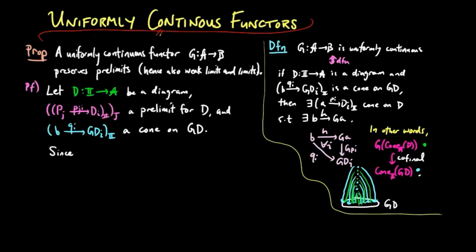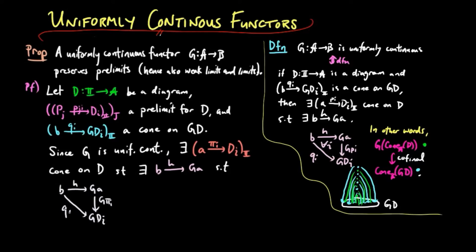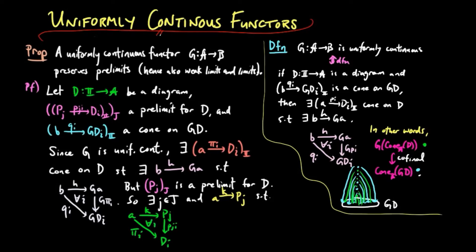Since G is uniformly continuous, there exists a cone PII on D, such that there exists a B morphism H from B to GA, such that G PII H is equal to QI for each I. But since PJ is a pre-limit for D, there exists a little j in the set J, and an A morphism K from A to PJ, such that PJI K is equal to PII for each I.